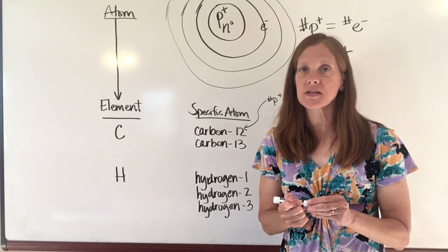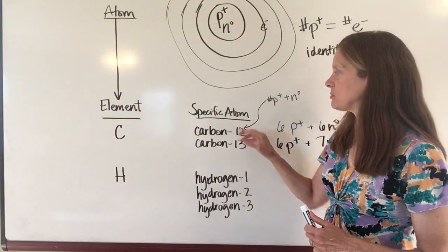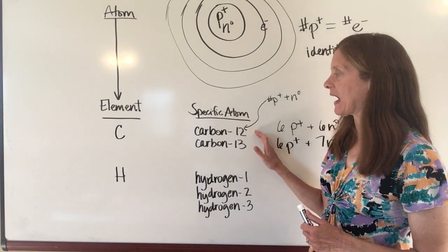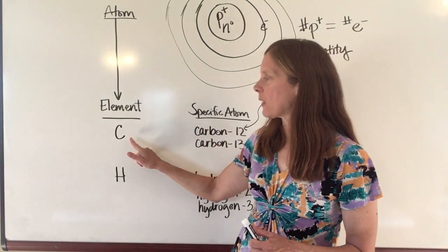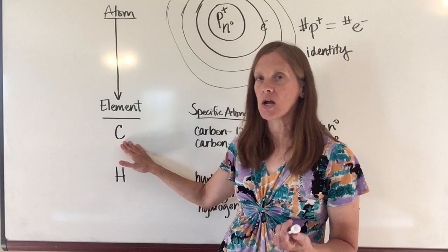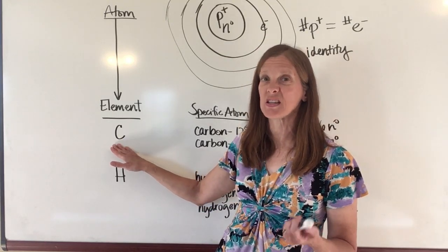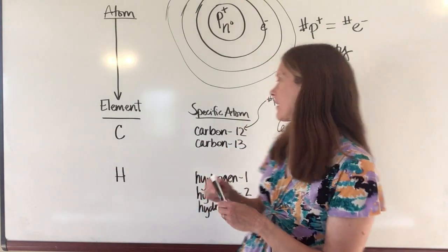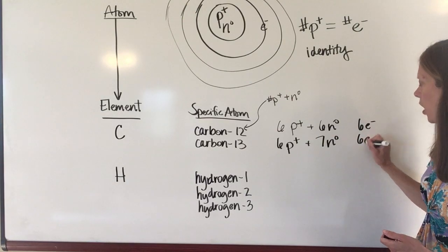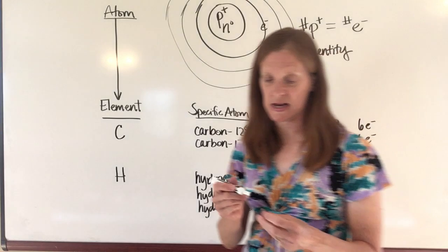When I write the name of an atom with a number after it, that tells me that I have a very specific atom—it tells me exactly what the makeup of that atom is. But if I write the name of it like this, this just tells me it's a generic atom of carbon. All I know about this one for sure is that it's going to have six protons, and I should mention that these also are going to have six electrons, because all atoms—like we said—number of protons and number of electrons are going to be the same.